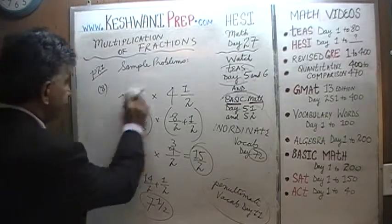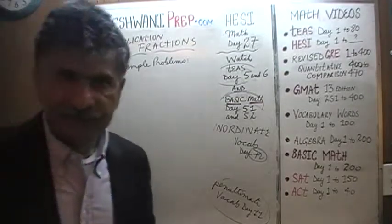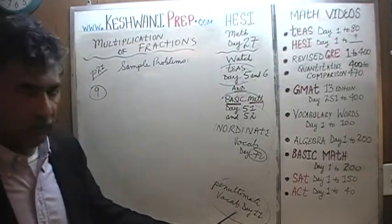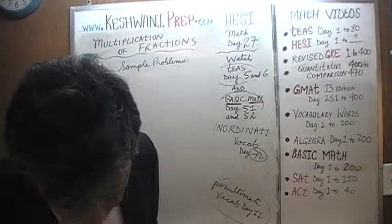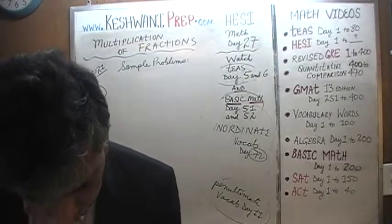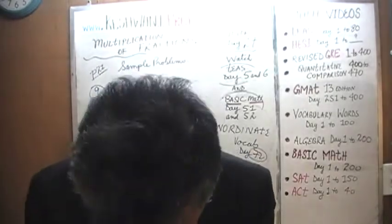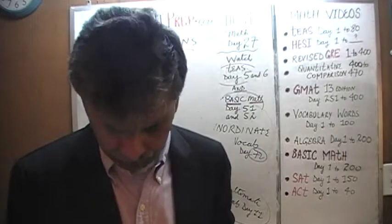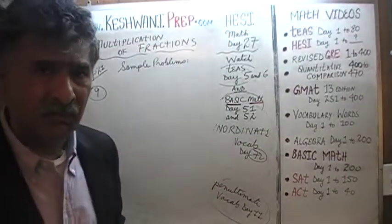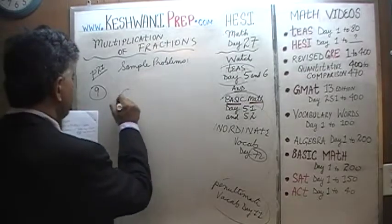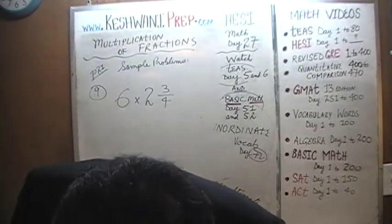Let's do number 9 — the penultimate problem, the second to the last. 'Penultimate' is a word we learned on Day 11 of our vocabulary lessons. Number 9 says: Alex has 6 friends who each give him 2 and 3 quarters pieces of gum. How many pieces of gum does Alex have now?